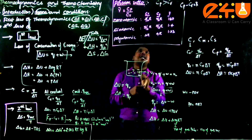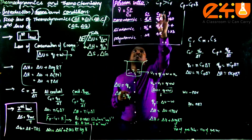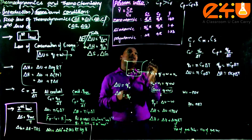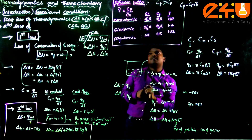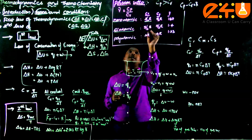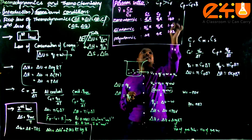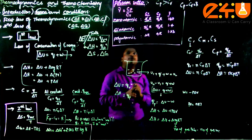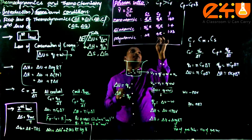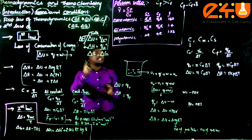For monoatomic gases: Cv = 3/2 R, Cp = 5/2 R, γ = 1.67. For diatomic gases: Cv = 5/2 R, Cp = 7/2 R, γ = 1.4. For polyatomic gases: Cv = 3R, Cp = 4R, γ = 1.33. These are the values you must remember for the second type of questions.